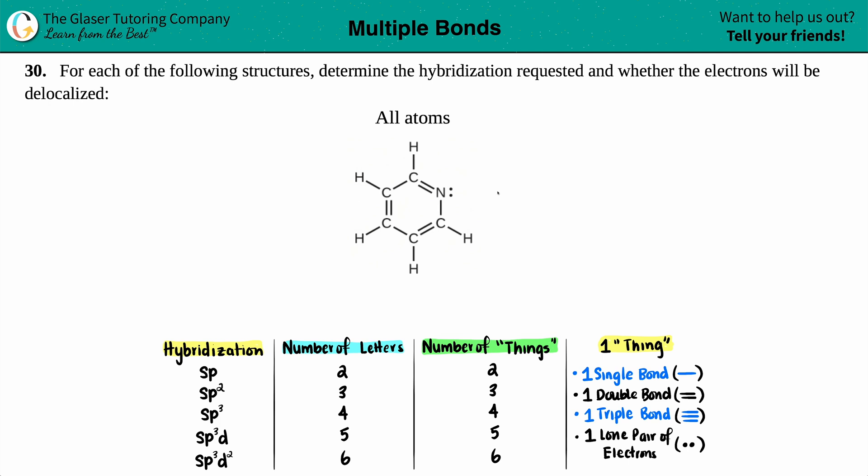Number 30. For each of the following structures, determine the hybridization requested and whether the electrons will be delocalized. And in this case, we have to do the hybridization for all atoms. Oh boy, but at least they gave us the Lewis structure because the easiest way to find a hybridization of an atom is always to draw out the Lewis structure. But they did that for us. So thank you very much for that.